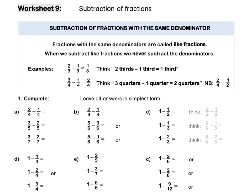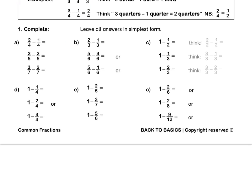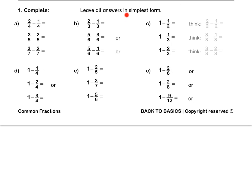Worksheet 9: Subtraction of fractions. When we subtract like fractions, we never subtract the denominators. Two thirds minus one third is going to give us one third. Three quarters minus one quarter is two quarters, and two quarters is equal to one half. Question 1: Leave all answers in simplest form. For 1A, two quarters minus one quarter is one quarter. For the next one, five sixths minus three sixths is two sixths, or in simplest form, one third.